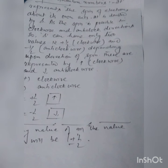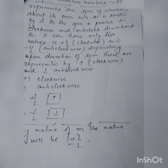Number four: the Spin Quantum Number, denoted by small s. It represents the spin of the electron about its own axis. Since spin is possible in clockwise and anti-clockwise directions, s can have only two values: plus 1/2 for clockwise and minus 1/2 for anti-clockwise. For any value of m, s equals plus or minus 1/2. These spins are represented by vertical arrows: upward arrow for plus 1/2 (clockwise) and downward arrow for minus 1/2 (anti-clockwise).